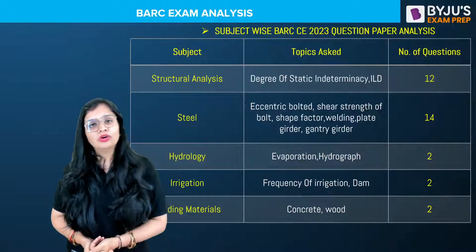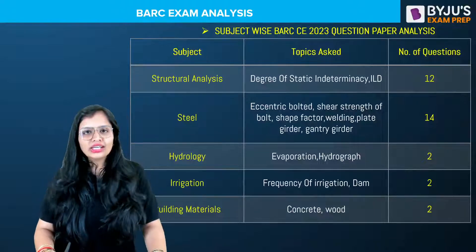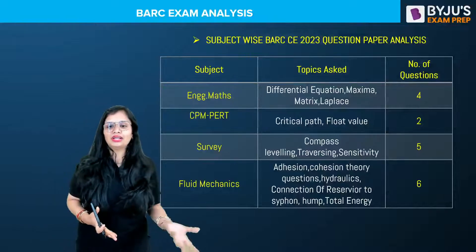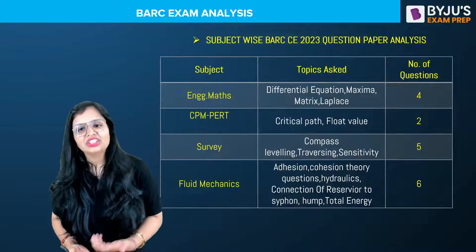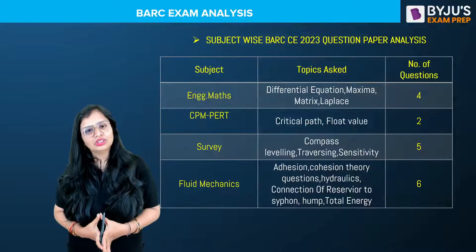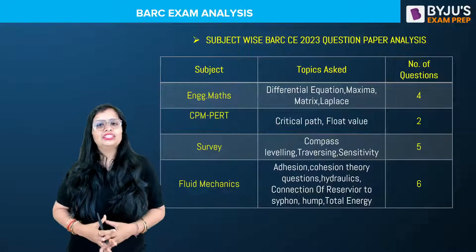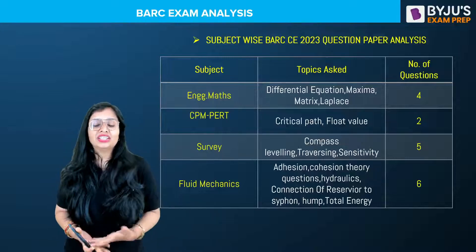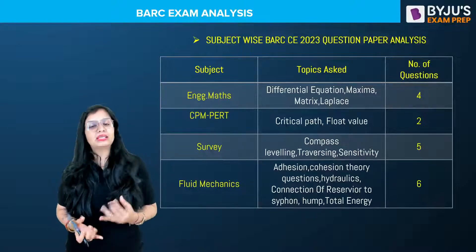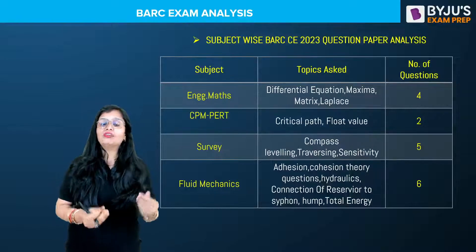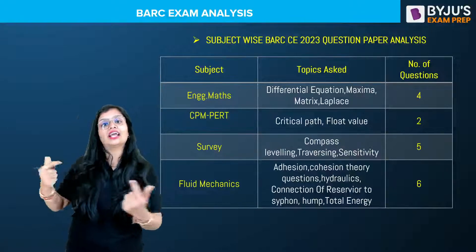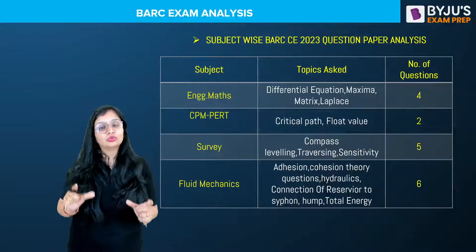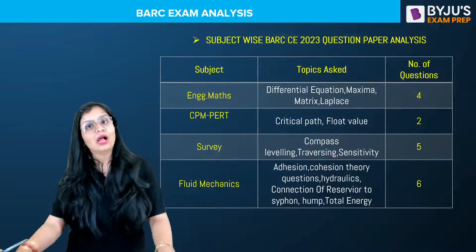For Building Materials, questions related to concrete and wood were there. In Engineering Mathematics, questions on differential equations, maxima, matrix, and Laplace transform were asked. For CPM, there was a question related to the critical path where optimistic time, pessimistic time, and most likely time were given, and you had to calculate the critical path. This was a time-consuming question. There was also a question on float value.